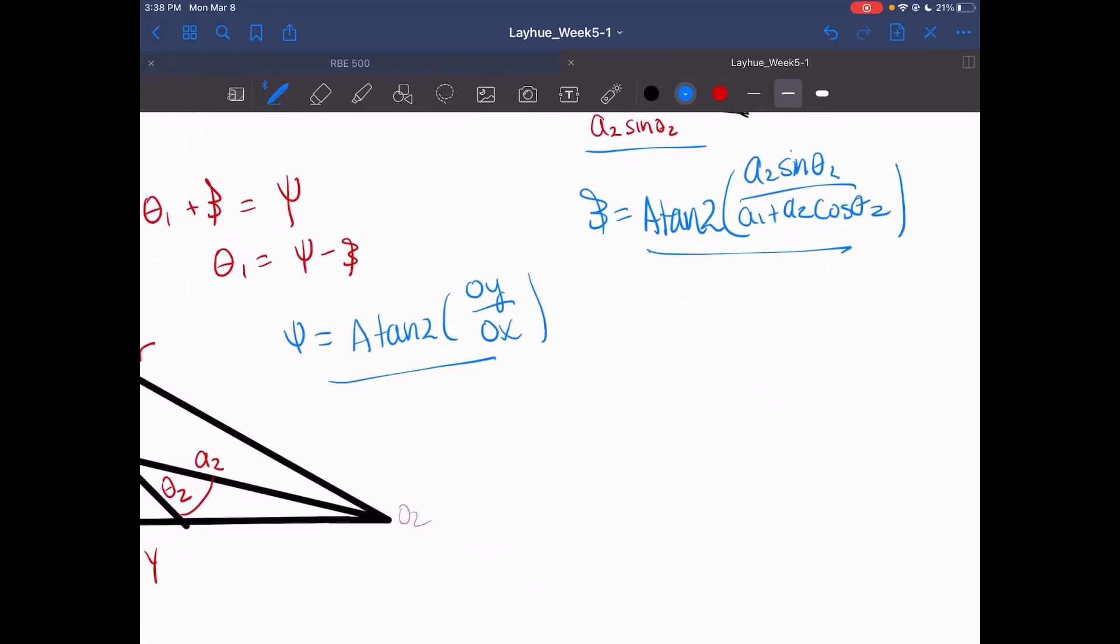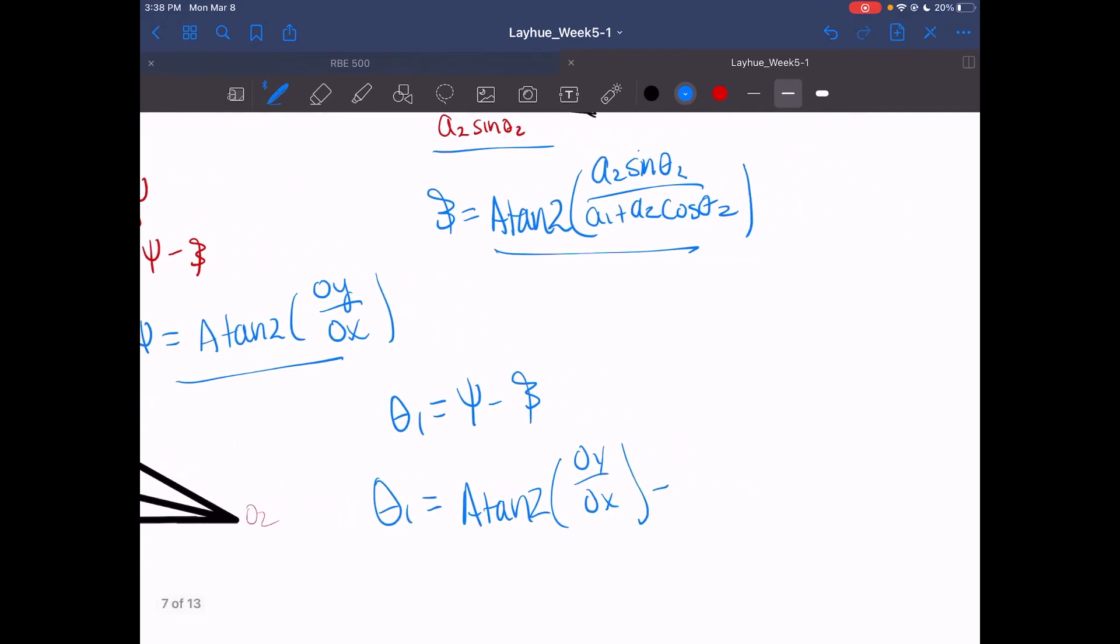So now we have these two, and now we can calculate for our theta1. So now theta1, since it's equal to psi minus beta, theta1 is equal to atan2 of OY over OX minus atan2 of what beta was—so that is a2 sine theta2 over the a1 plus a2 cosine theta2.